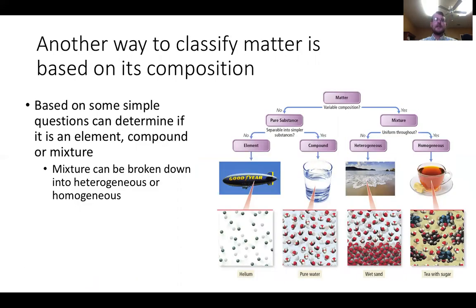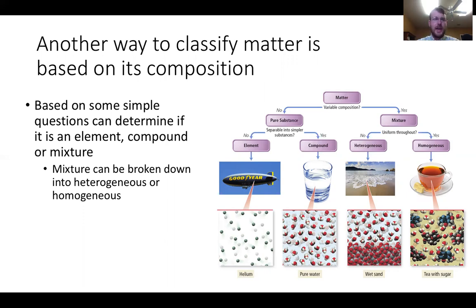Another way to classify matter is by its composition. We can ask: is it a pure substance or a mixture? A pure substance has only one component and its composition is invariant — pure water contains only H2O. A mixture is composed of two or more components in proportions that vary. Pure substances can further be classified as elements or compounds.